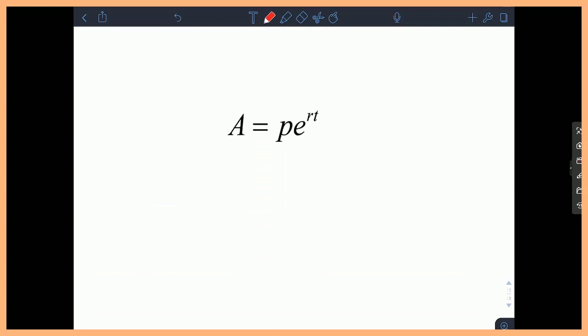The next formula is also an investment formula, but this one's only used when you're compounded continuously. In this one we just usually call PERT. A equals P times E raised to the RT. You only ever use this formula if the directions say the investment is compounded continuously, which means that the amount of money is compounded at every second.